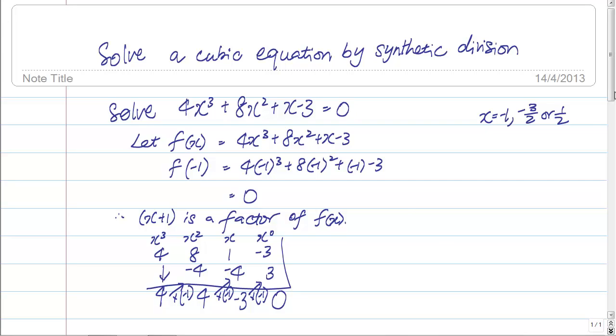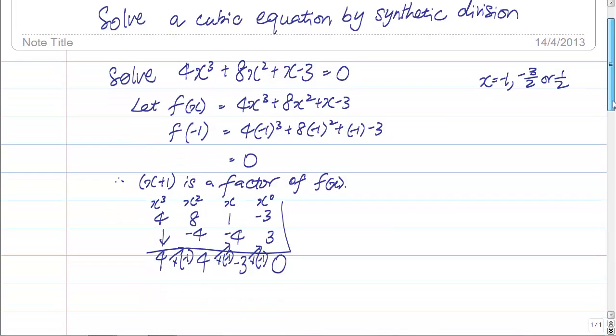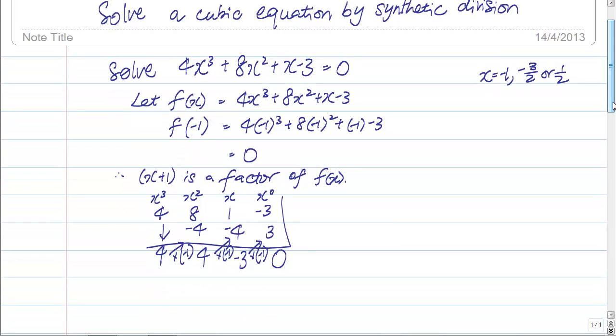At this point, we need to understand. What does these three numbers represent? It represents the coefficient of x squared, coefficient of x, and coefficient of the constant. One thing for you to take note is, whenever you're doing synthetic division, you've got to ensure that your final value is 0. With that, we can continue.